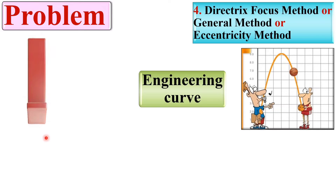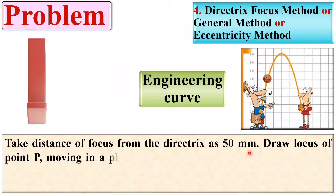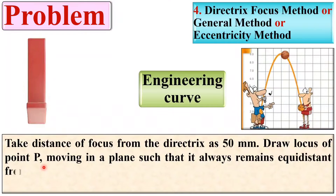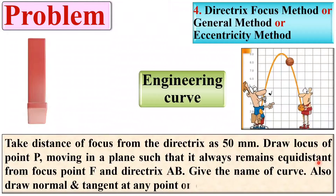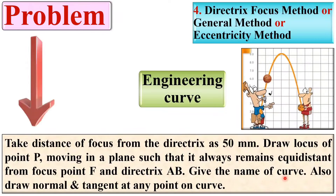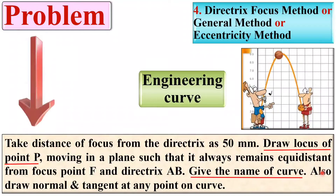Let us first look at the description of the given problem. Take the distance of focus from the directrix as 50 mm. Draw the locus of point P moving in a plane such that it always remains equidistant from focus point F and directrix AB. Give the name of the curve. Also draw the normal and tangent at any point on the curve. Basically, there are three different objectives: first, draw the locus of point P; second, give the name of the curve; and third, draw the normal and tangent at any point on the curve.